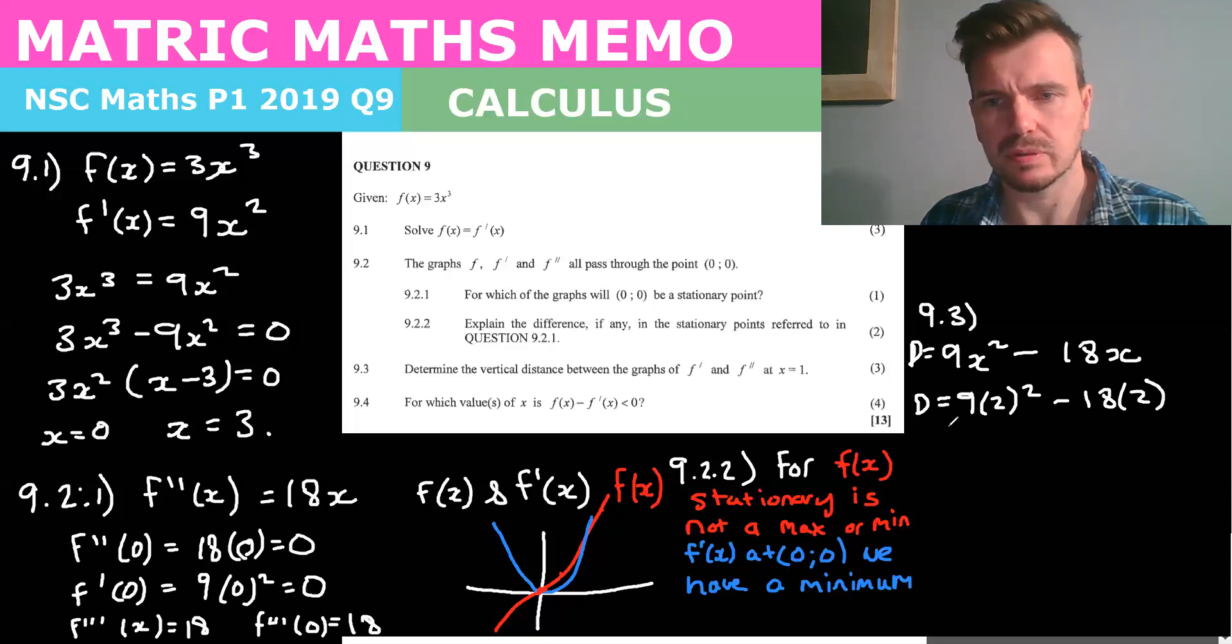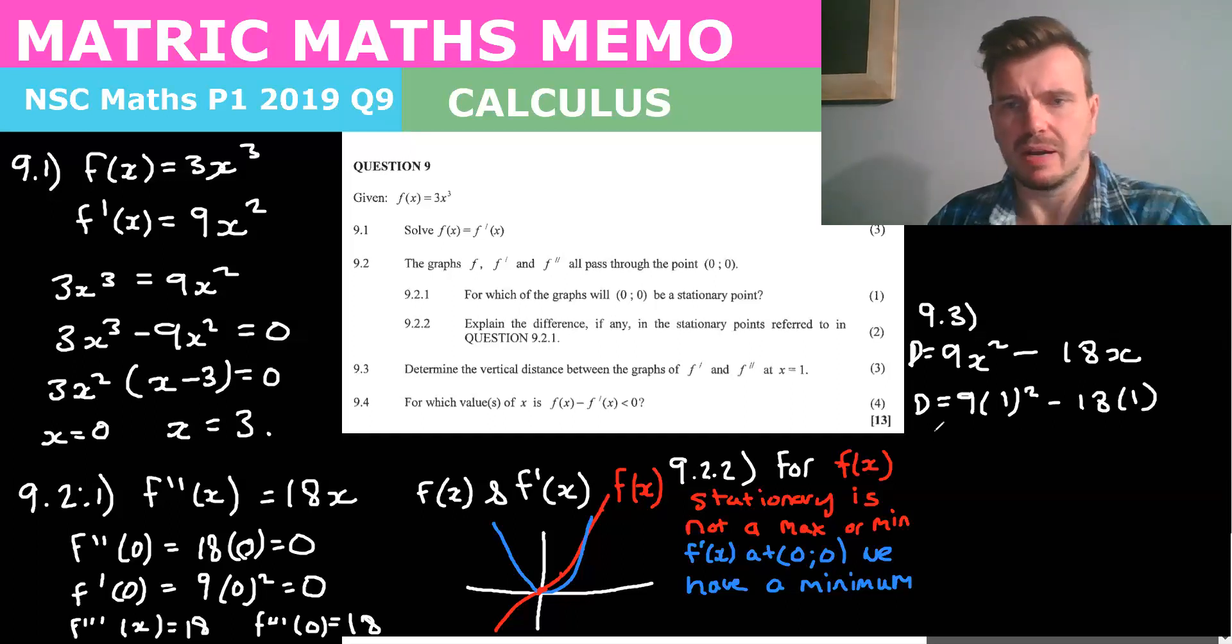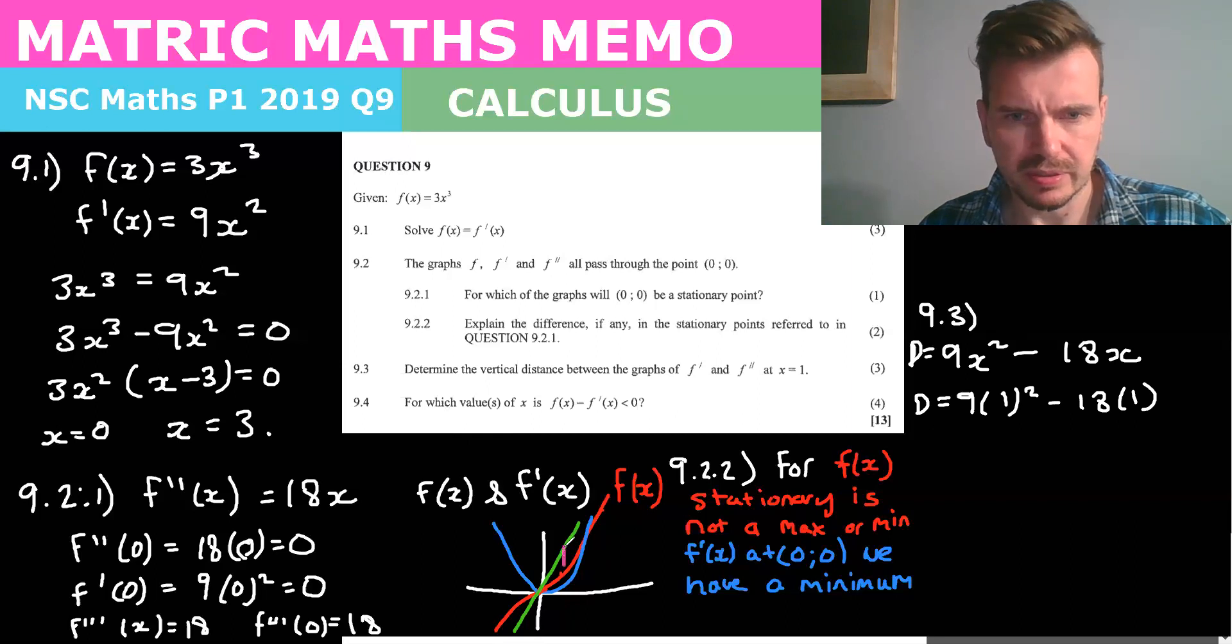Oh not at 2 but 1 I wanted at 1 because remember this will give you the y value. So if we were to draw the graph 18x, let's do that in green quickly, very steep graph. What they want is the vertical distance between the two at one. So that could be something like this in the yellow line and so basically they want the y value of f dash of x and the y value of f double dash of x at one.